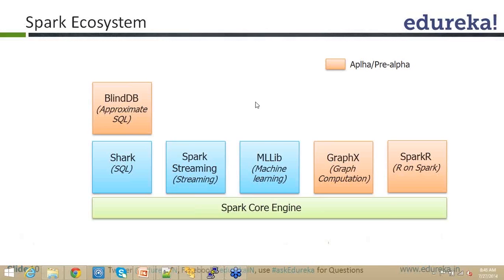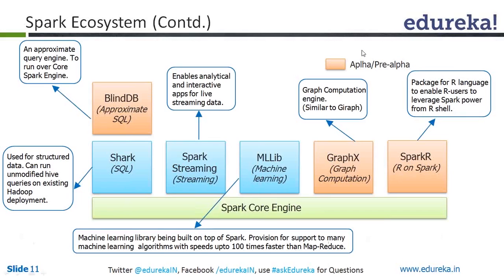On top of that, there is something called BlindDB. The name is quite interesting — it's a 'blind database' of sorts. It is approximate SQL, which is a very interesting concept. It means: I'm getting a barrage of data, a huge amount, and I'm not really interested in exact results. I just want to get a feel of it — approximate results. So you fire a query, do some sampling, and get output. That is approximate SQL. Many times a sampling result is good enough.